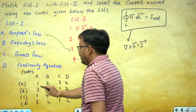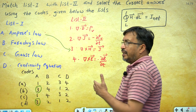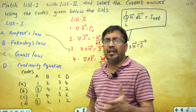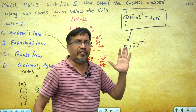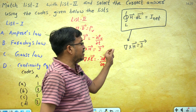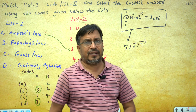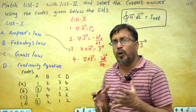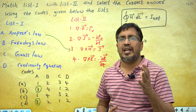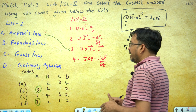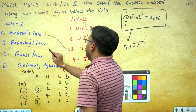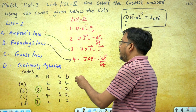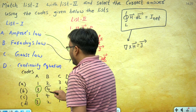The closed-loop line integral of H dot dL equals the surface integral of J dot dS, from which curl H equals J is derived. For List 1 B, Faraday's law: EMF induced in a closed circuit equals the rate of change of magnetic flux. We just derived the equation curl E equals minus ∂B/∂t, which corresponds to List 2 item 4. So option B is correct — List 1 B matches List 2 item 4.